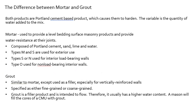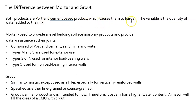Moving on to mortar and grout — both are Portland cement products, which causes them to harden. The key variable is the amount of water added to them.